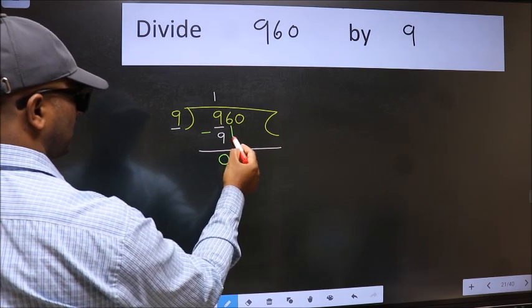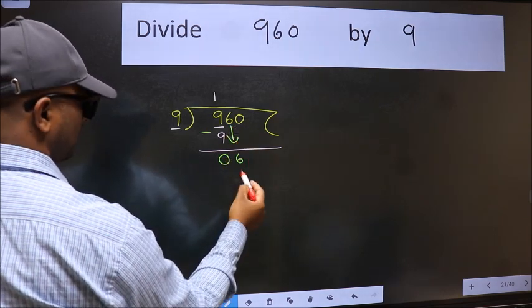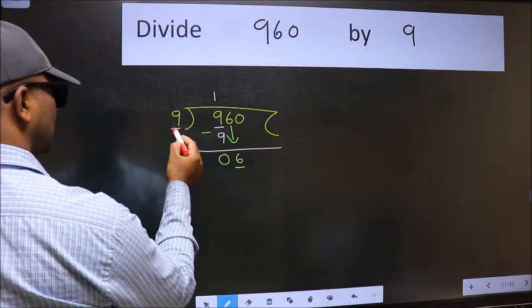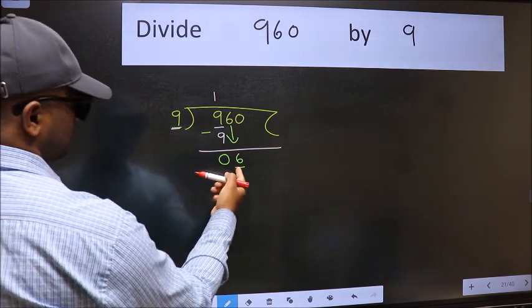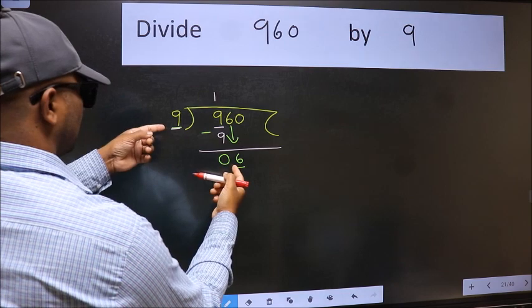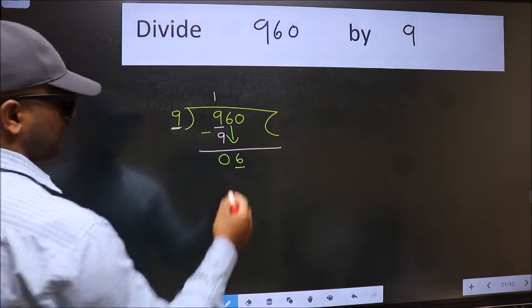After this, bring down the beside number. So 6 down. Now here we have 6 and here 9. 6 is smaller than 9, so we should bring down the second number.